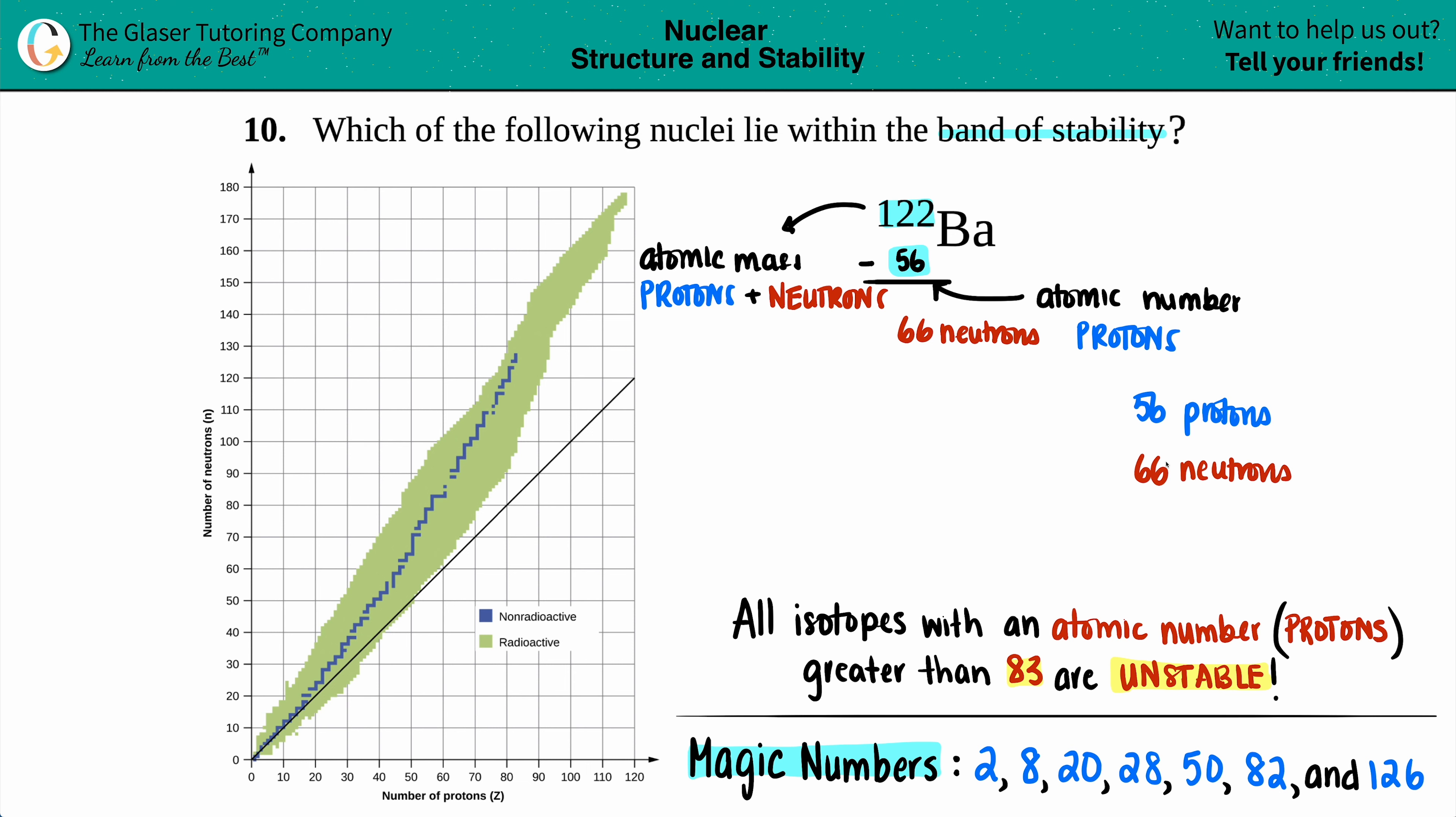So we got 56 protons and 66 neutrons. Now the key thing here is hopefully we get a magic number. Magic numbers are the numbers of protons or neutrons that are very stable, but there's seven magic numbers and it's not a 56 and it's not a 66. So that means that we have to go on this chart to see if it's in the band of stability.